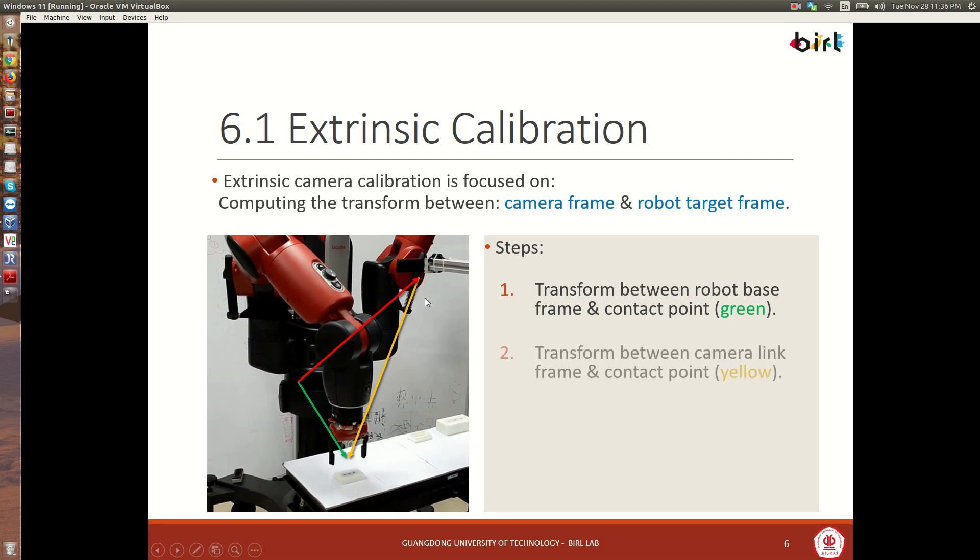And this transformation would follow the forward kinematics of the robot. The second transformation that you can get is from the camera link, or camera link frame, just to the contact point, or where the object is. Right? And then, you can do this through image processing, QR codes, that's something you'll do in your homework.